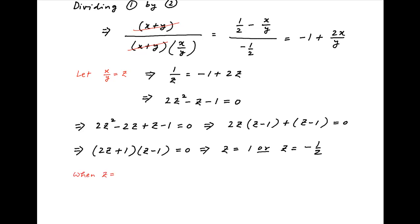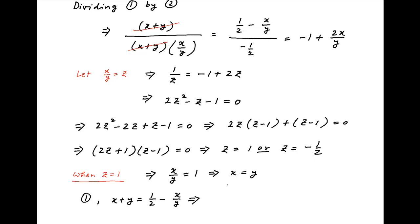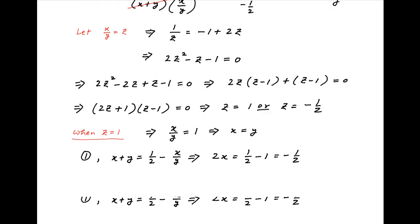Now consider the first case when z is equal to 1. This implies that x upon y is equal to 1, and therefore x is equal to y. Substituting this in equation 1, which is x plus y is equal to half minus x upon y, we get 2x is equal to half minus 1 which is equal to minus half. Therefore, x is equal to y is equal to minus 1 upon 4.